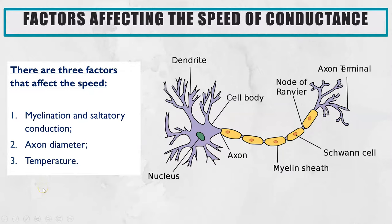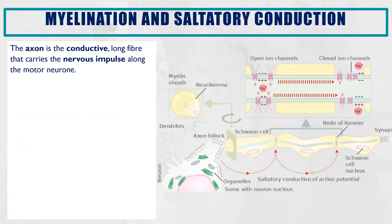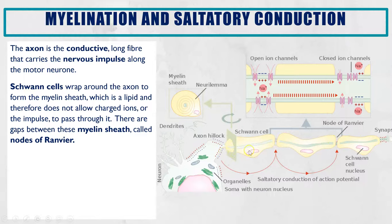Let's go through each of those. First, myelination results in saltatory conduction. The axon is the long fibre that conducts the nervous impulse, running along the middle. Schwann cells wrap around the axon and that is what forms the myelin sheath. Schwann cells are lipids, and because they are lipids, they actually insulate — they prevent charged ions from passing from the axon to the surroundings. There are gaps between these myelin sheaths, and these gaps are known as the nodes of Ranvier.